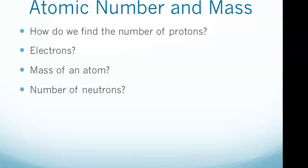The atomic number is the number of protons, and the number of protons equals the number of electrons. The mass of an atom is protons plus neutrons. To find the number of neutrons, take the atomic mass minus the number of protons. For example, nitrogen is atomic number 7 and the mass of its most common isotope is 14, therefore there are seven neutrons.